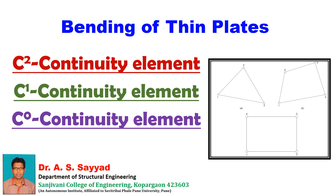The first is the second order continuity element, called as C2 continuity element. Then the first order continuity element, called as C1 continuity element. And the third is the C0 continuity element. So what are these three continuity elements? Those we will discuss today in this lecture.